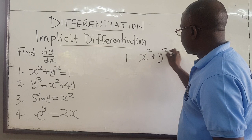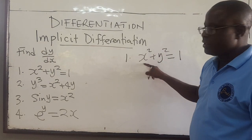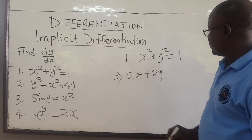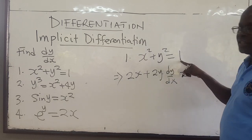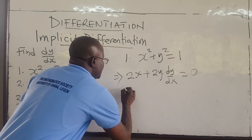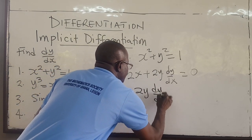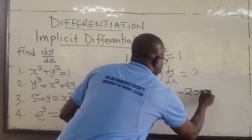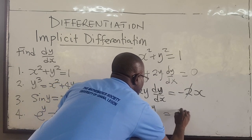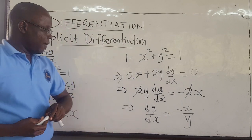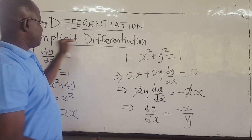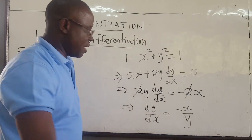Example 1: x squared plus y squared equals 1. To find the derivative, the derivative of x squared is 2x. The derivative of y squared is 2y times dy/dx. The derivative of 1 is 0 because it's a constant. So from here, we solve for dy/dx: 2y dy/dx equals negative 2x. The 2s cancel, and so dy/dx equals negative x over y.